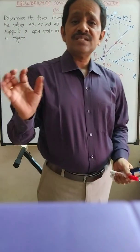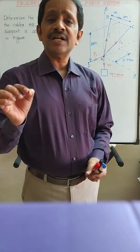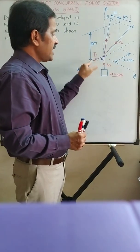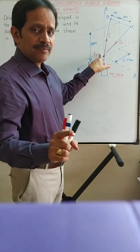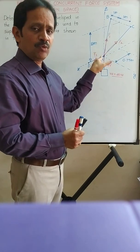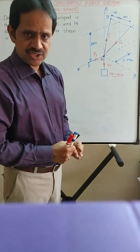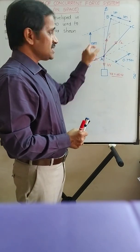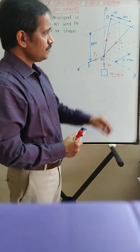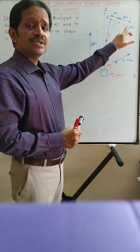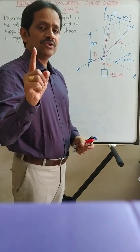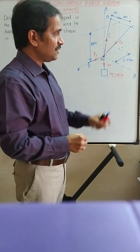When a system is in equilibrium, the resultant force of that system has to be zero. All four forces are acting at point A, which is in equilibrium, meaning the algebraic sum of all four forces at point A must be equal to zero. To take the algebraic sum of these four forces, we first write force vectors. To write force vectors, you must know the coordinates of the points, so the first step is to write the coordinates of the points.